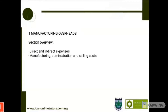Starting with manufacturing overheads — this first section is just a brief revision of what we did in the previous class. I talked about different types of expenses. Costs were given different kinds of categories. Here we have direct and indirect expenses, and we also have manufacturing, administration, and selling costs.